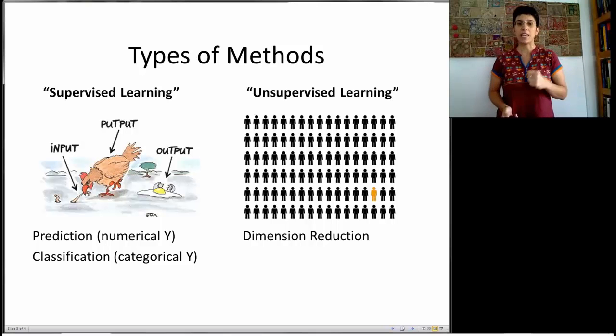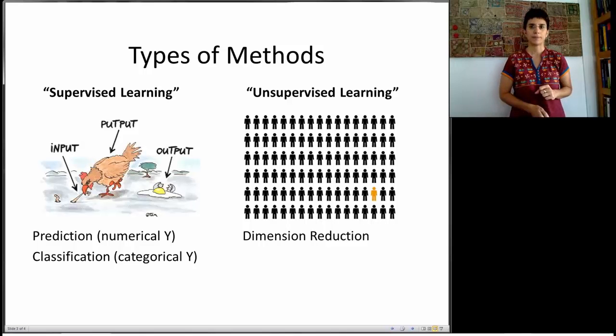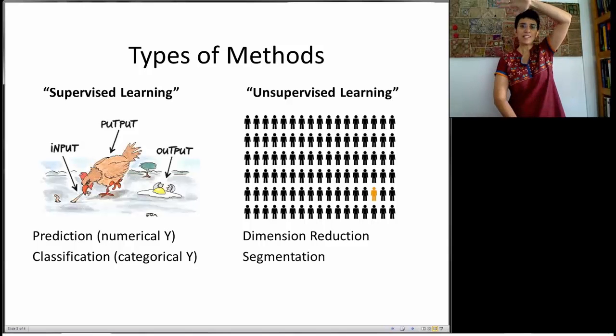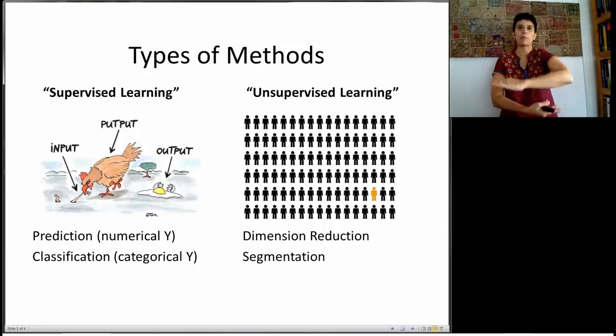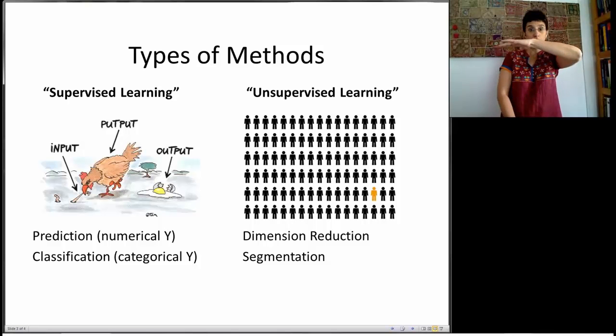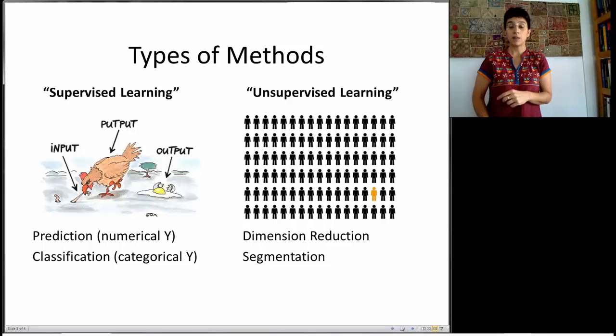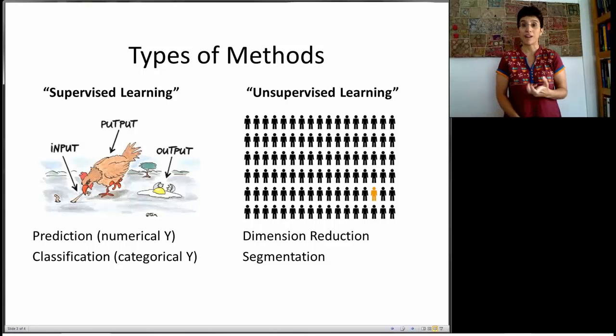And we'll see that there are a bunch of methods aimed at dimension reduction. Another goal that we want to achieve is to try and reduce the dimension in terms of the observations or the records. So instead of talking about one million customers, I want to segment them into, say, several segments of customers and talk about segments. So this is another type of methods, unsupervised techniques that are aimed at segmentation or clustering.